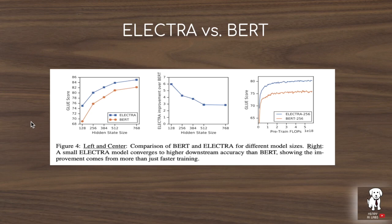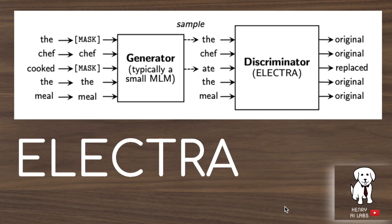Thanks for watching this explanation of the replace token detection task introduced in the ELECTRA framework for pre-training language models for downstream tasks like natural language inference, sentiment classification, and question answering — all encompassed in the GLUE benchmark. ELECTRA outperforms masked language modeling trained transformers like GPT, BERT, RoBERTa, and XLNet using less compute and smaller model sizes, because it defines the loss over all input tokens and avoids the train-test mask token discrepancy. Please subscribe to Henry AI Labs for more deep learning and AI videos.